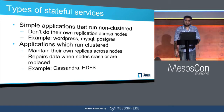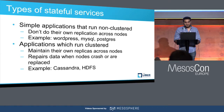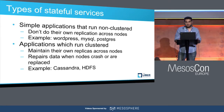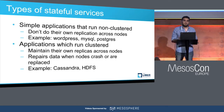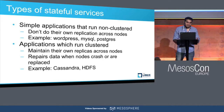Let's talk about stateful services. There are basically two types when it comes to persisting data. The first are simple applications which don't do their own replication — they rely on the underlying storage layer to always be available. In cases of failure, the storage layer makes the same volume available on another node so the application can come up with the same state.